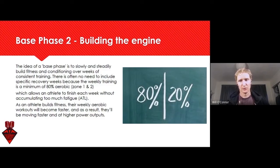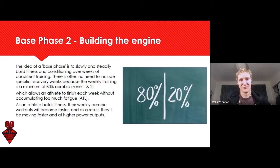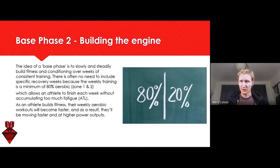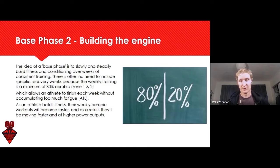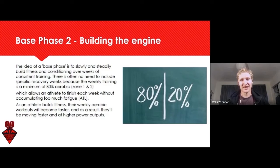Within base phase two I like to incorporate the 80/20 rule — we've seen it applied to so many facets of life. Depending on what books you read, it's 20% hard training and 80% aerobic base phase training. A question I get a lot is: how do you apply this? Is this 80/20 per session, per week, per month? Is it by time, heart rate, or distance? How do you see the 80/20 being applied within a plan?